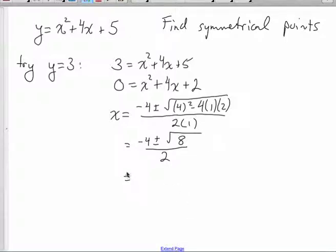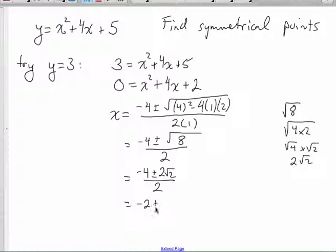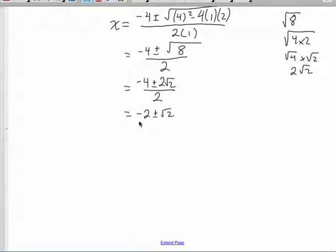Now, in simplified form, negative 4, plus or minus root 8, can be rewritten as root 4 times root 2. Now the square root of 4 is 2, and I'm left with 2 root 2. Plus or minus 2 root 2 over 2. Now, the reason I did that, I can simplify even further. Divide this term, this term, and this term by 2. I'm left with negative 2, plus or minus square root 2.